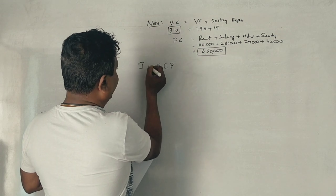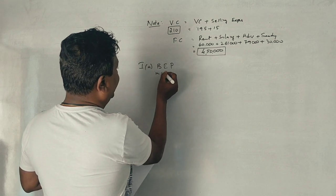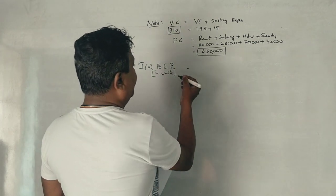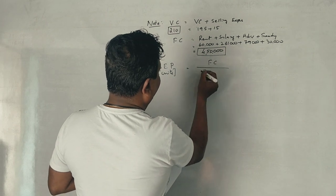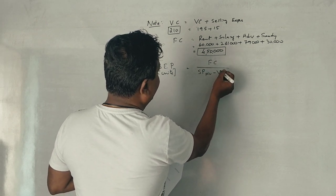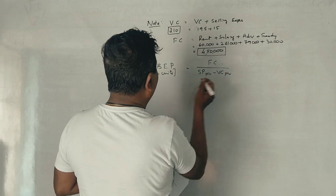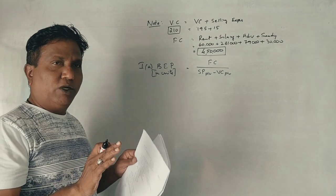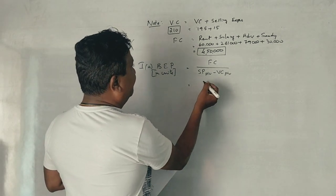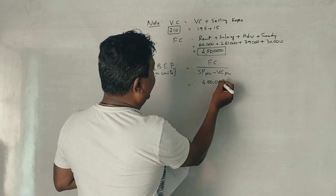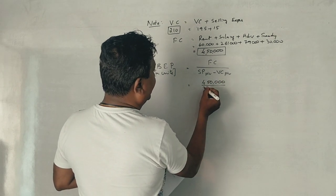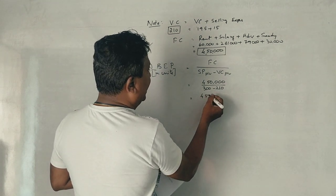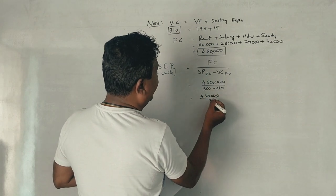First question: break-even point in units. The formula is: Break-even point = Fixed Cost divided by (Selling Price per unit minus Variable Cost per unit). Fixed cost is 4,50,000 rupees. Selling price is 300 rupees minus variable cost of 210 rupees, giving a contribution of 90 rupees per pair.